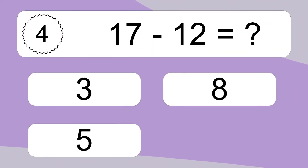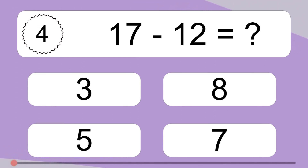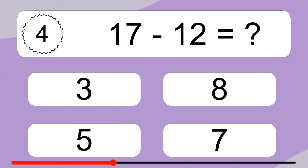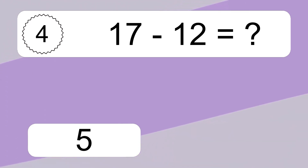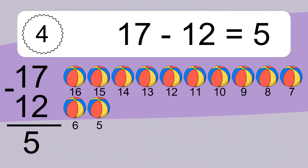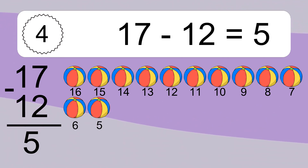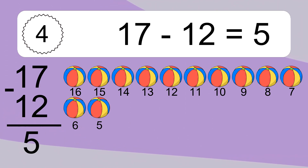17 minus 12 equals what? 17 minus 12 equals 5. Let's count it: 16, 15, 14, 13, 12, 11, 10, 9, 8, 7, 6, 5.